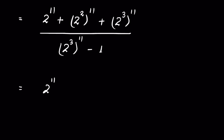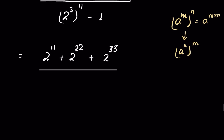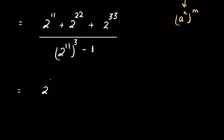There is an identity: (a^m)^n = a^(m×n). Applying this, the numerator becomes 2¹¹ + 2²² + 2³³. The denominator 8¹¹ can also be written as (2¹¹)³, so the denominator is (2¹¹)³ - 1.